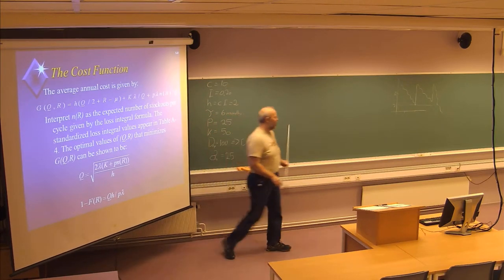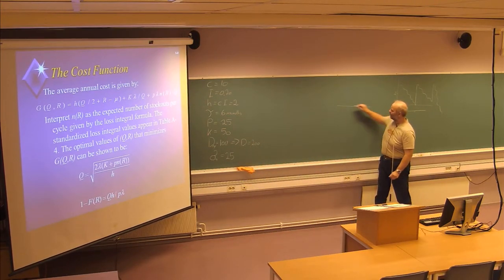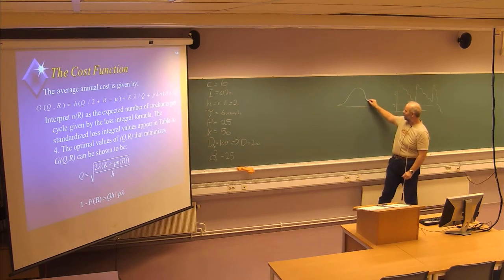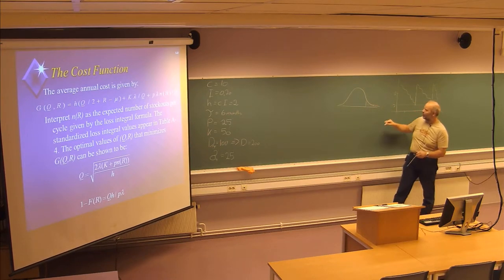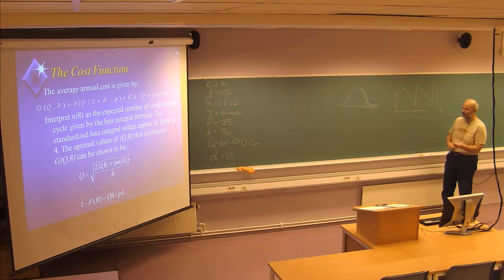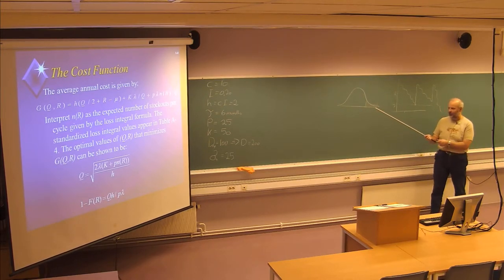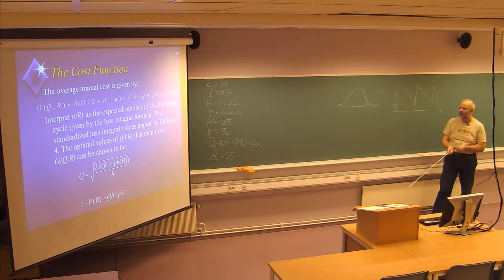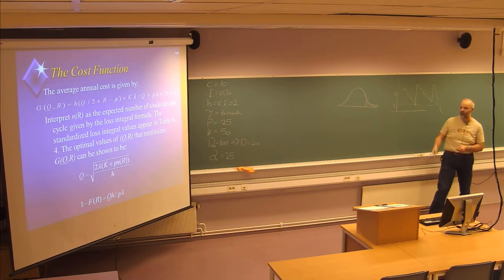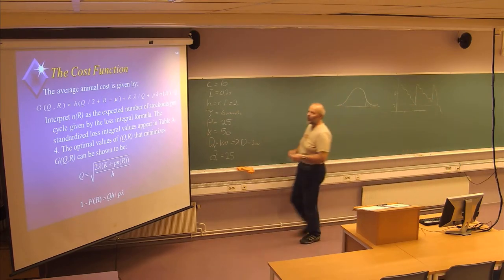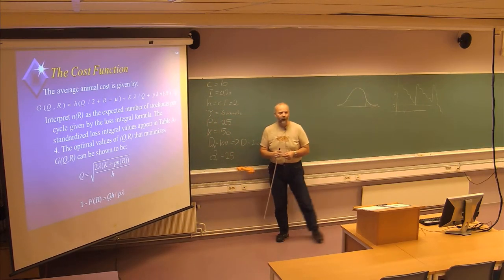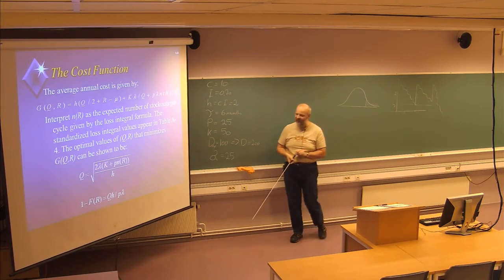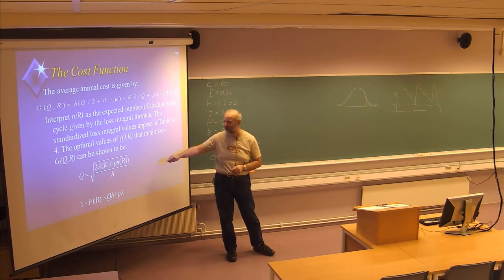The expression 1 minus F(R), for a normal distribution, corresponds to the area under the normal distribution curve that is larger than the value described by reorder point R — which is the probability of a stock-out for a certain reorder point value. We now have two functions, Q and 1 minus F(R), which should be solved iteratively — alternating between them — until we get the same value in two consecutive iterations for one of the variables, indicating convergence.